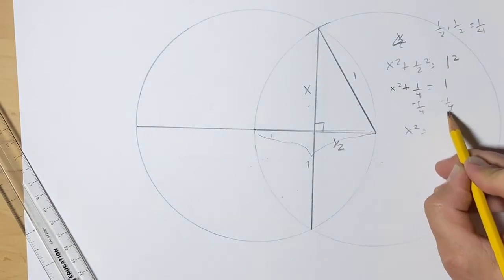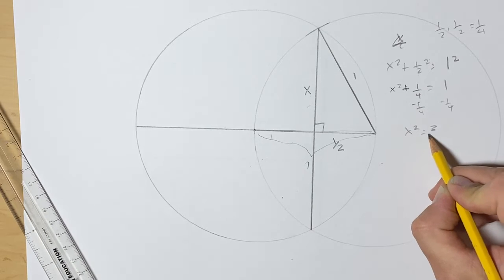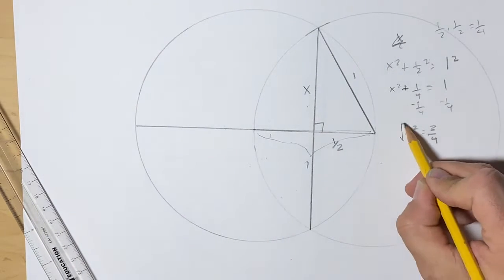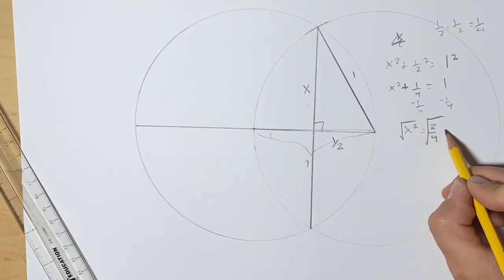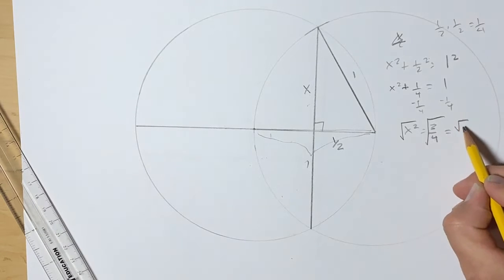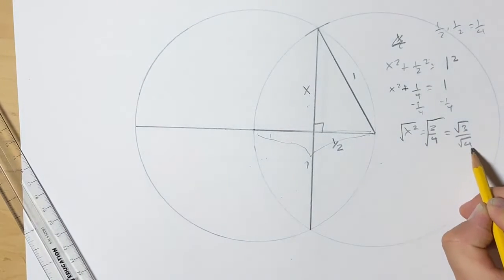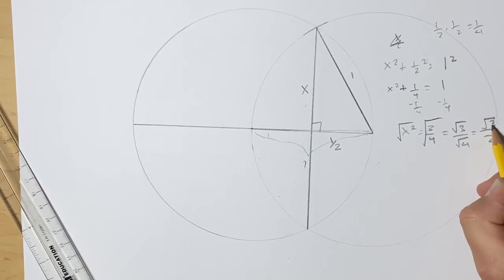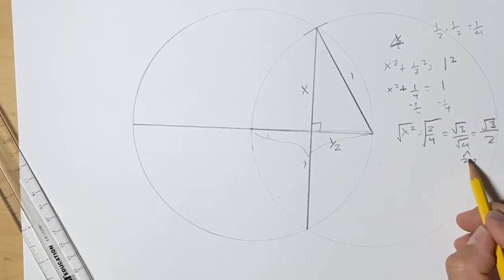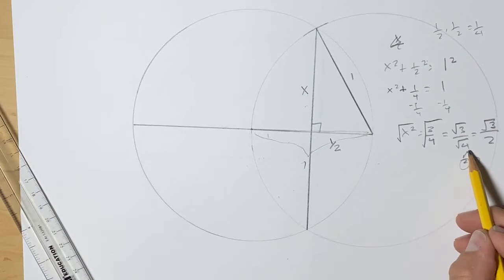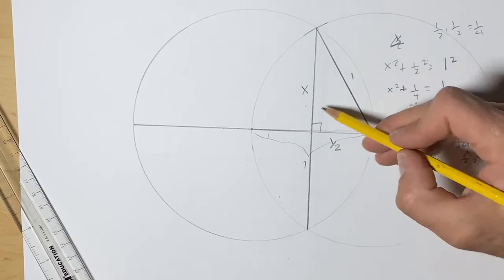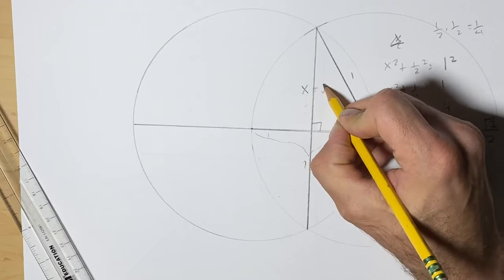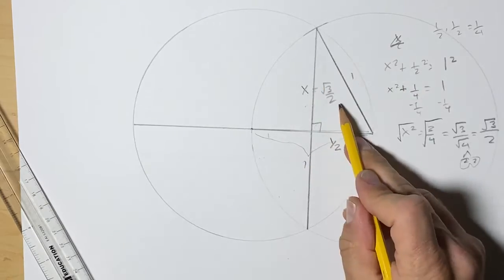So x squared is going to be 1 take away 1 fourth, will be 3 fourths. I will root both sides and I will get, by our rule, we can separate them. Radical 3 over radical 4, the same thing. And radical 4 we know is 2. When we take out 2 times 2, we take out a pair, and that's the square root of 4 is 2. So this amount here is radical 3 over 2. That's what we're going to be using.